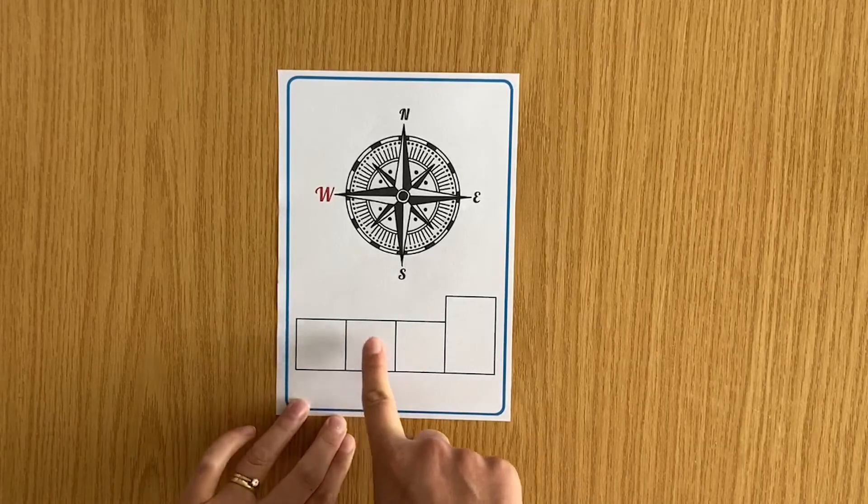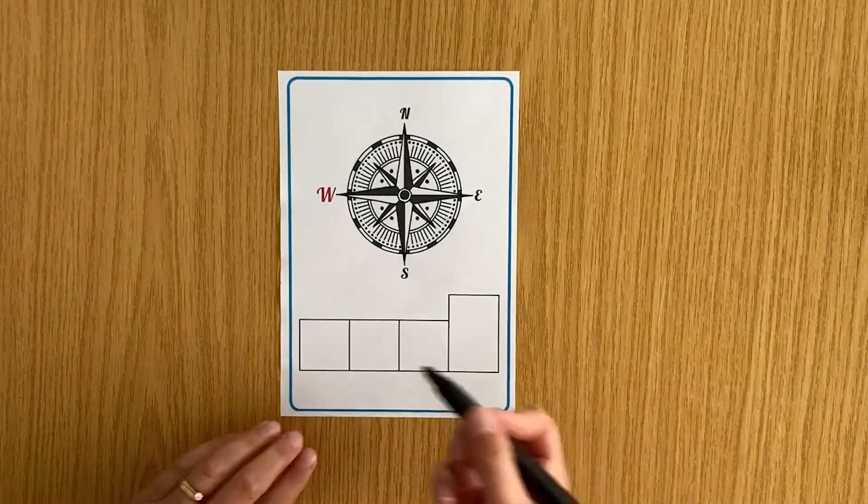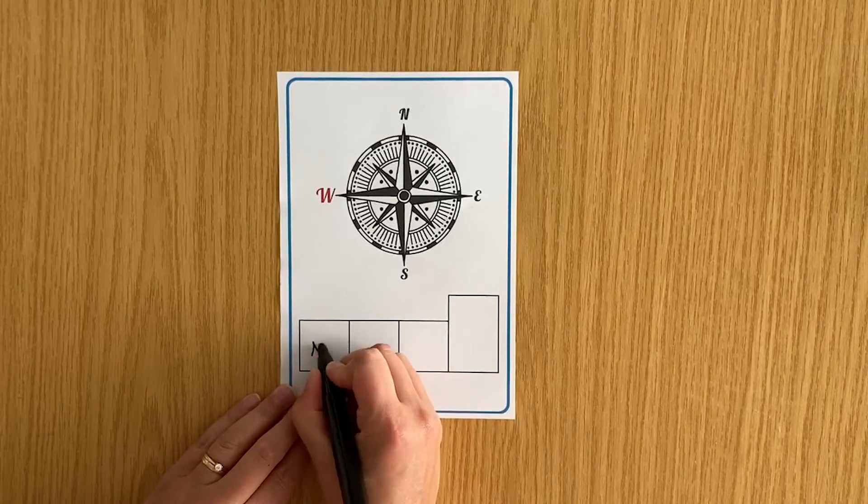The phoneme frame helps your child to see how many sounds there are in the word, in this case four, which helps them to have a go at spelling the word.